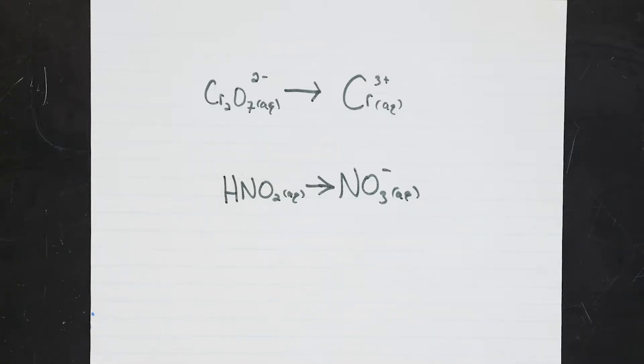Next, balance all of the elements in each reaction that aren't oxygen or hydrogen. That's because we'll balance oxygen and hydrogen in a unique way in just a moment. Once your atoms other than oxygen and hydrogen are balanced, you then balance oxygen by adding water molecules as necessary. Add as many water molecules as you need to make the total number of oxygen atoms balanced in each half reaction.